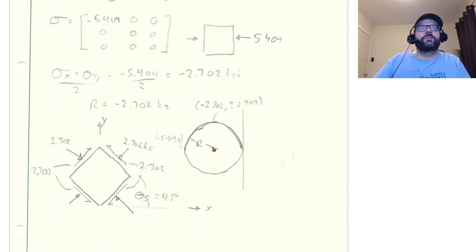So we just need to figure out what our maximum shear stress is. So, again, just plotting Mohr's circle, the center of our Mohr's circle is going to be the sigma X plus sigma Y divided by 2.